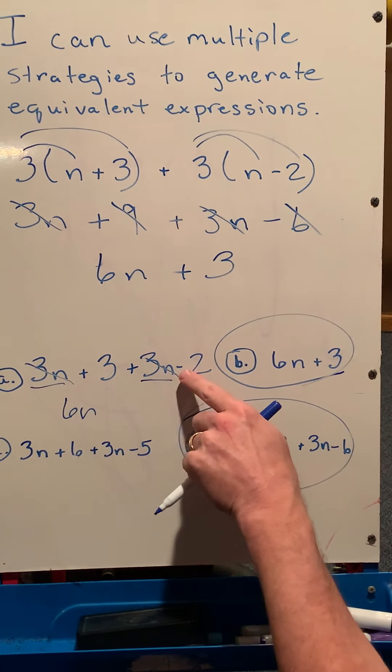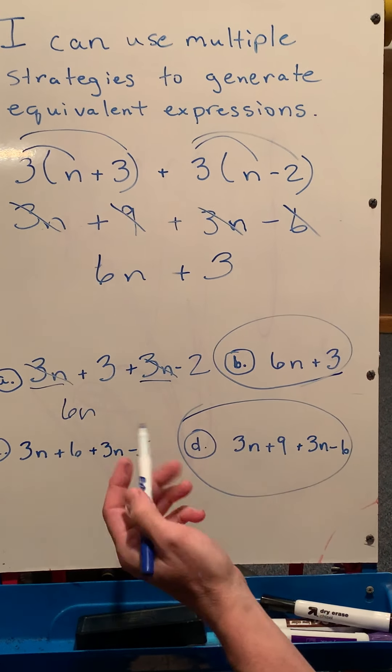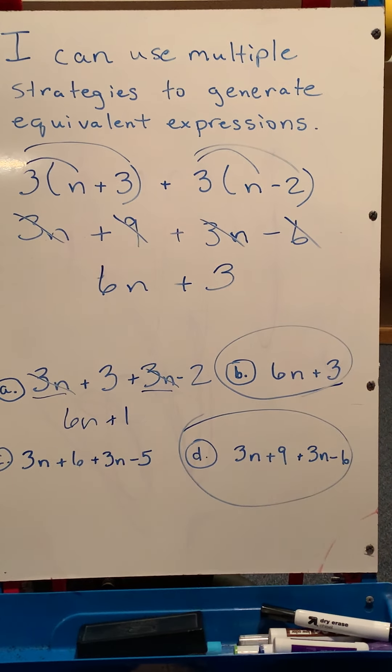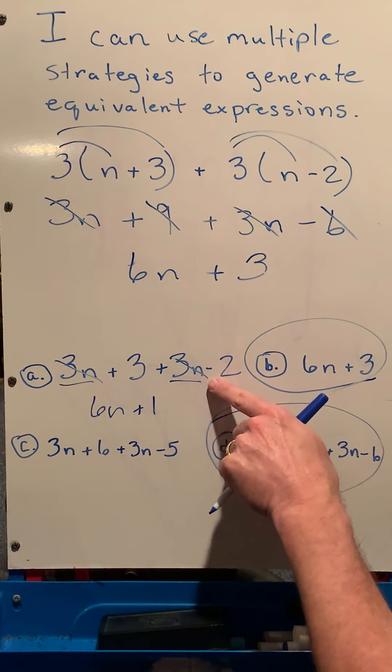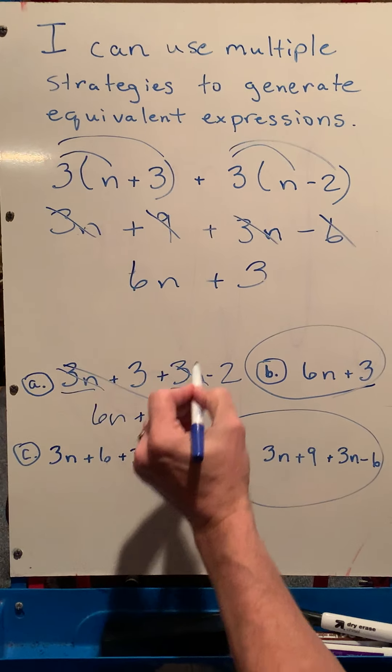But on this one, I have a positive 3, take away 2, is a positive 1. So 6n plus 1 is not the same as 6n plus 3. So this expression was not equivalent. We can cross that one out.